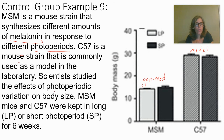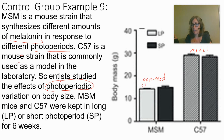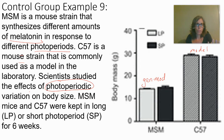A photoperiod is how much light there is — for example, three hours versus 17 hours of light. The hypothesis is that melatonin may affect body size. MSM and C57 mice were kept in long or short photoperiods for six weeks. For the genetically modified MSM mice, there's really no difference between long and short photoperiod.